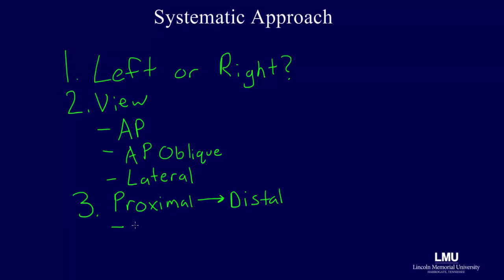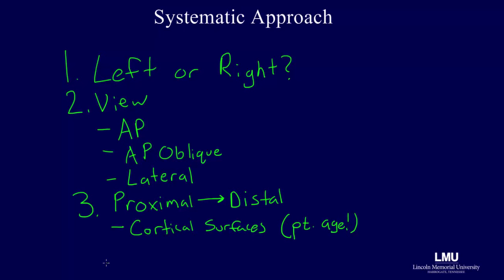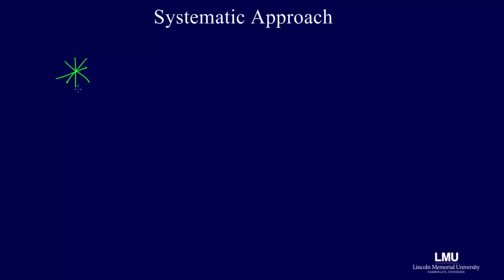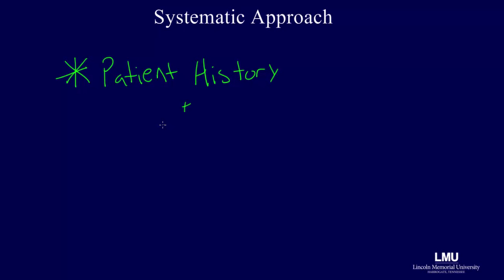Start proximally and continue distally. Begin by evaluating the cortical surfaces of individual bones, recognizing that areas of bone growth in children may appear as cortical disruptions. Then proceed to evaluate the relationships between the bones, such as relative bone placement and spacing. Keep in mind that these relationships will differ on weight-bearing and non-weight-bearing views. Always evaluate a radiograph in the context of the patient's history and physical presentation.